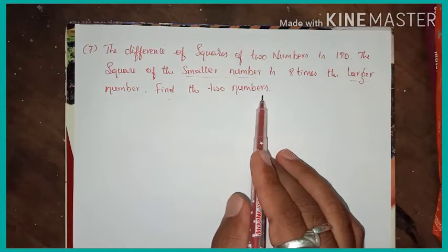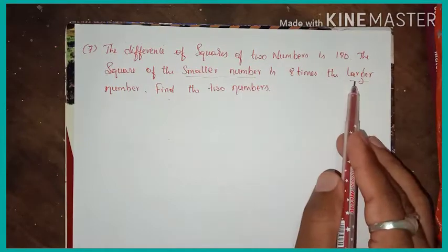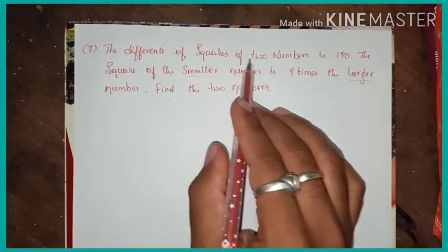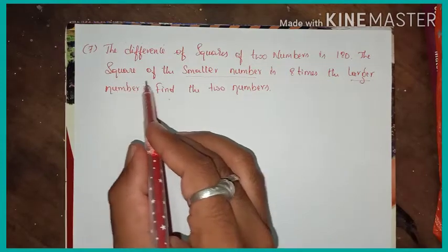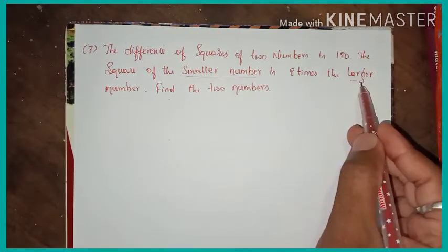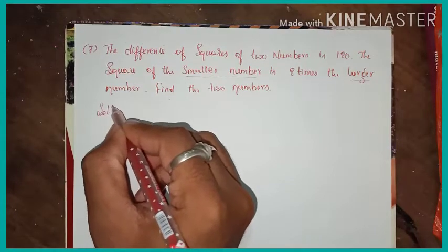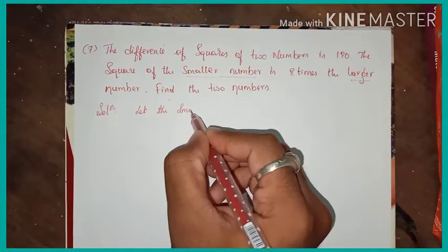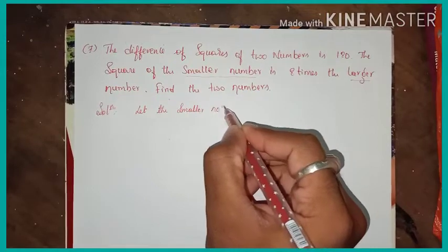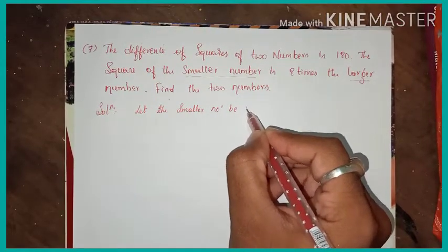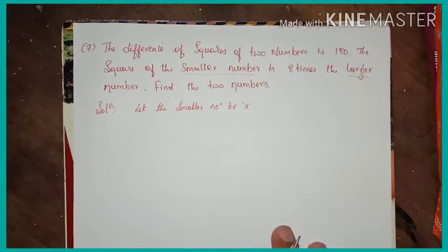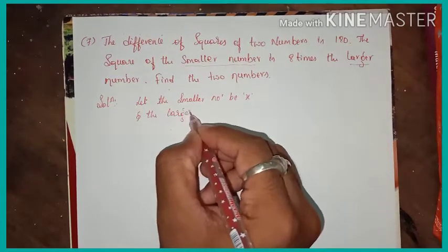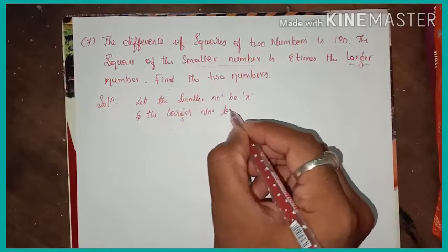There are two numbers we have to find out — one is the smaller number and another one is the larger number. Let the smaller number be x and the larger number be y.